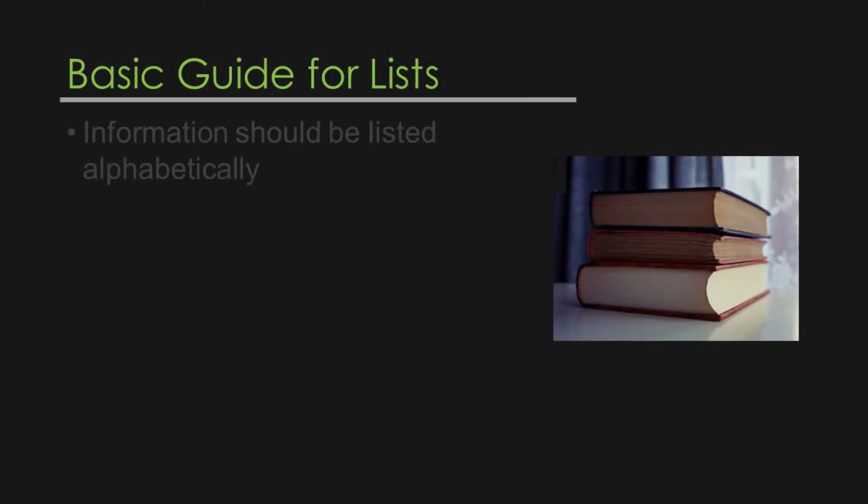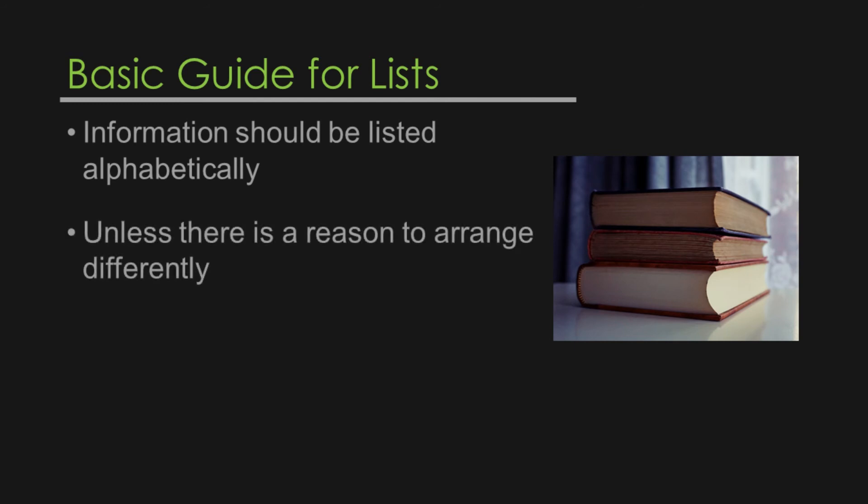The last thing to talk about is lists. They aren't nearly as common, but lists can really help the reader understand information in your manuscript. Lists are in their own category — they aren't considered tables and they're not figures either. When creating your list, check with your journal guidelines, as not all journals permit lists. Generally, your list should have information arranged alphabetically, unless there's reason to arrange it differently. Your list should also have an unnumbered title.